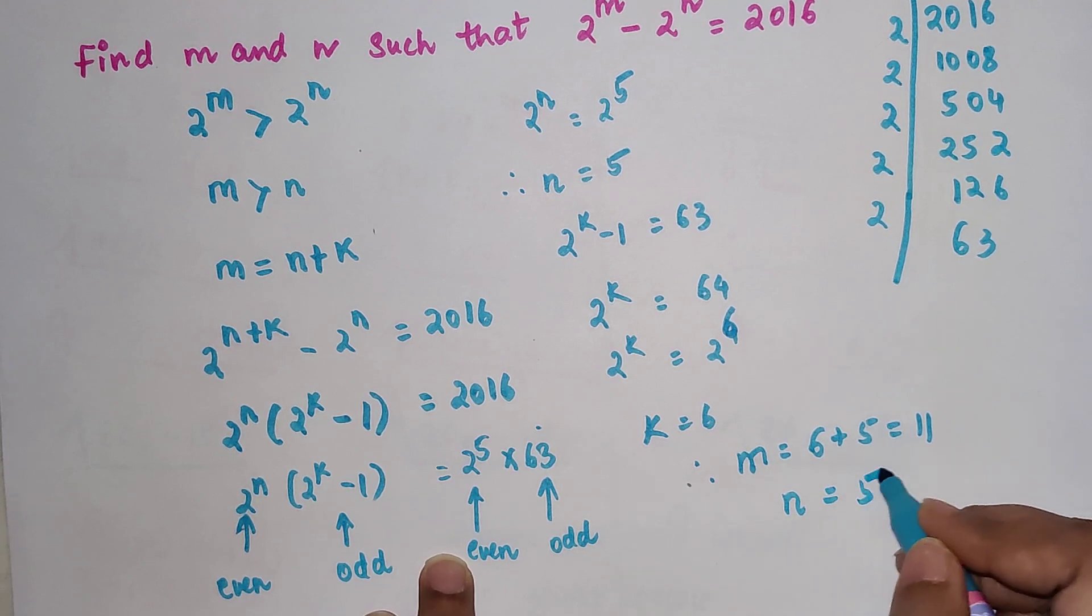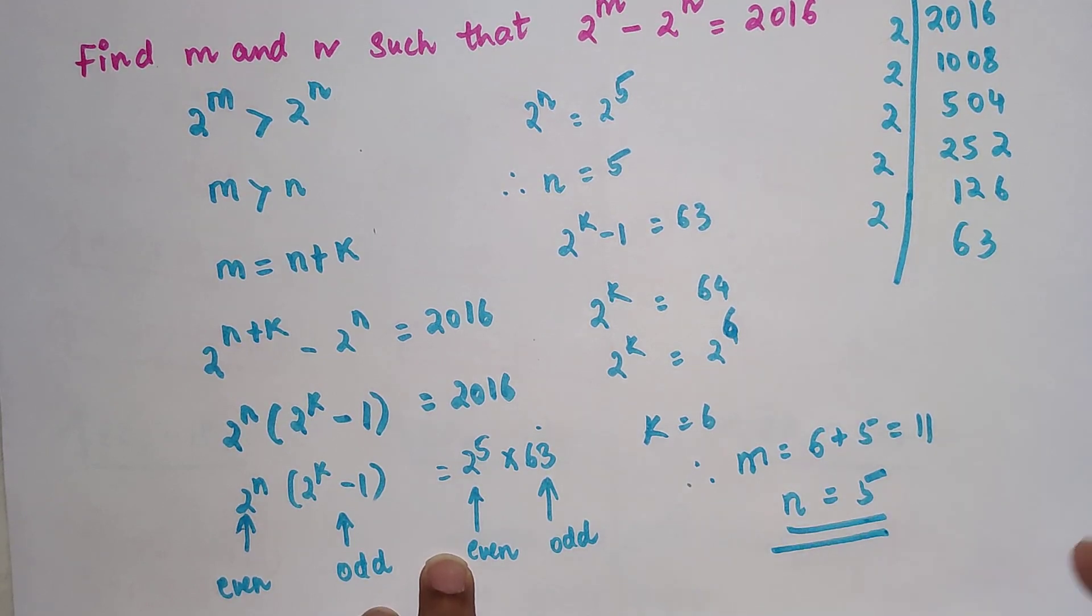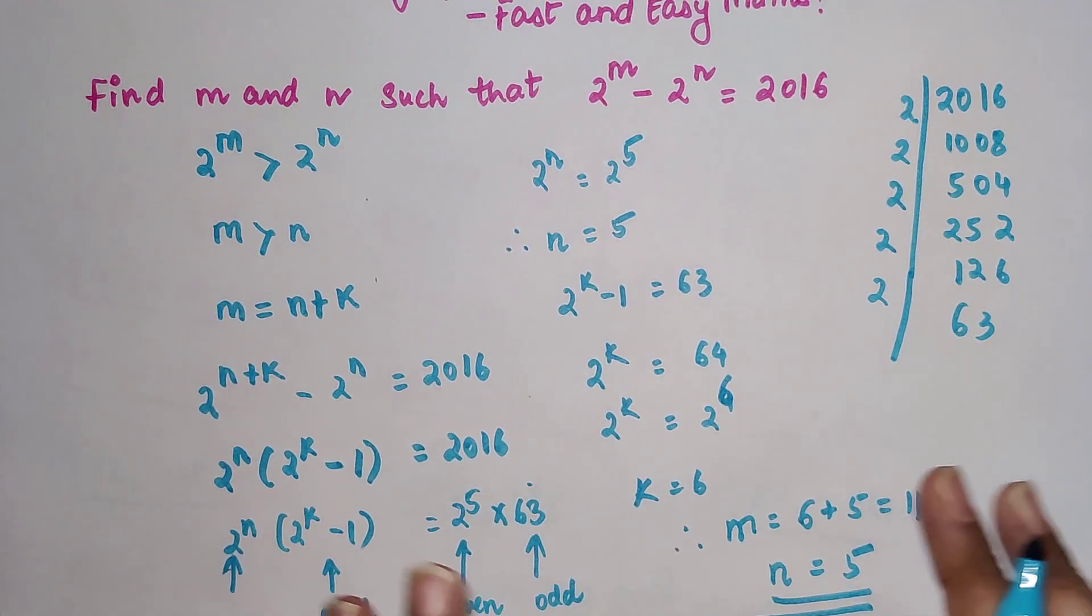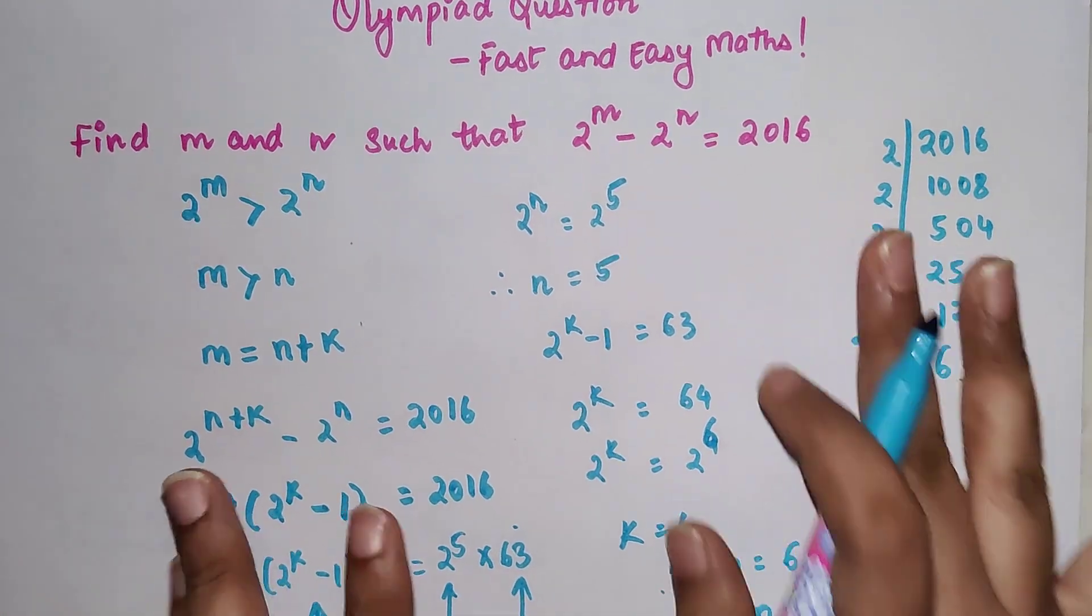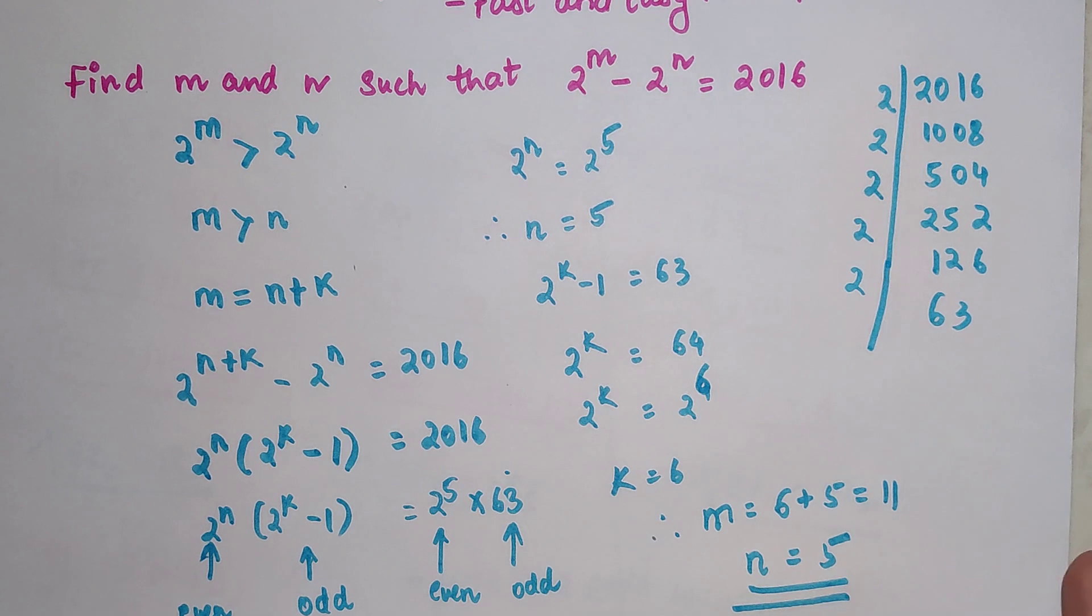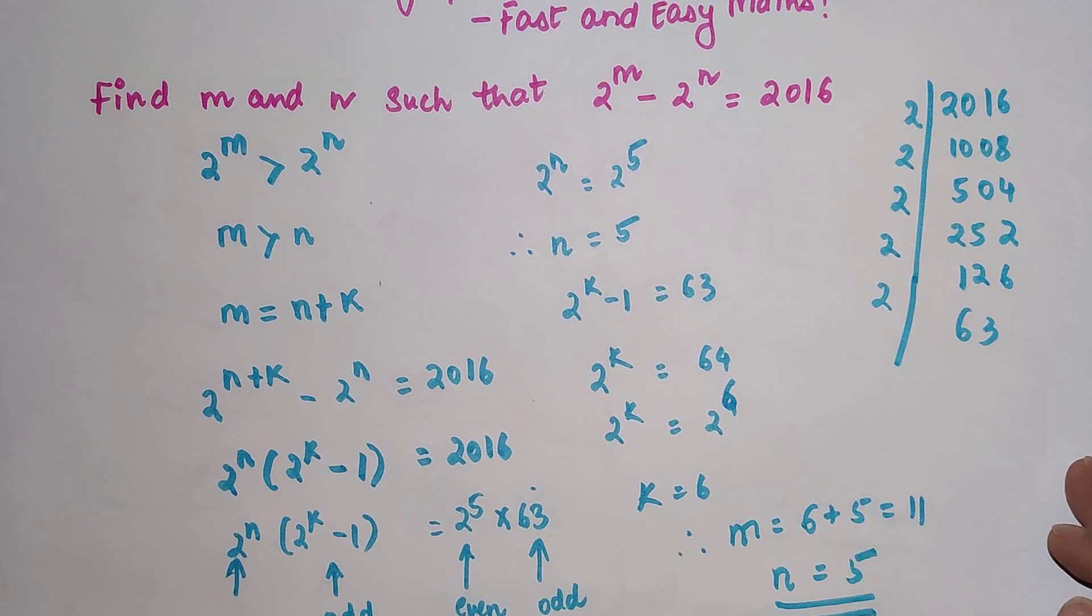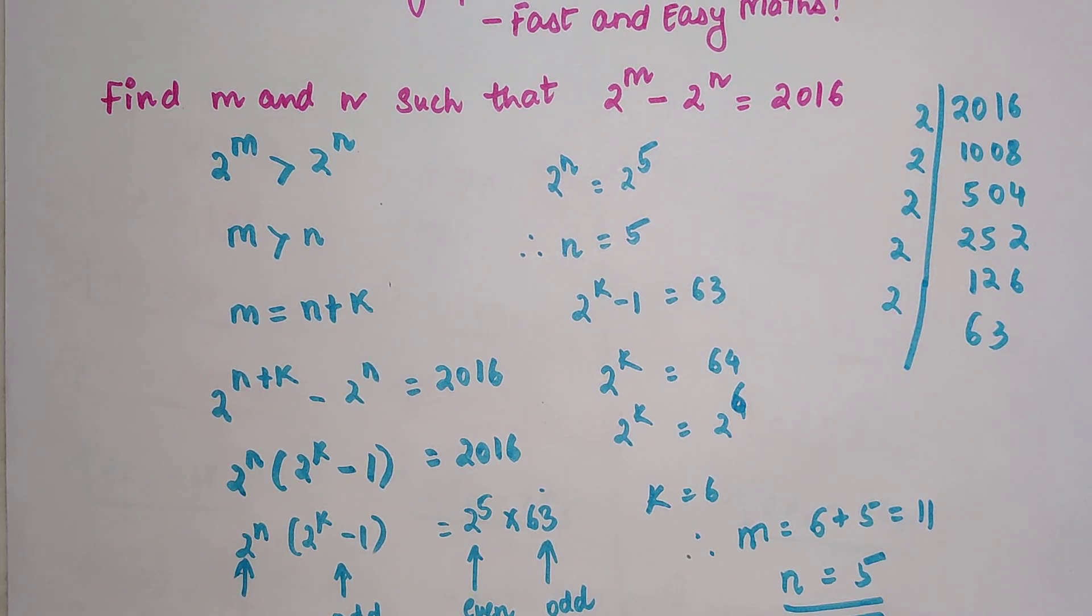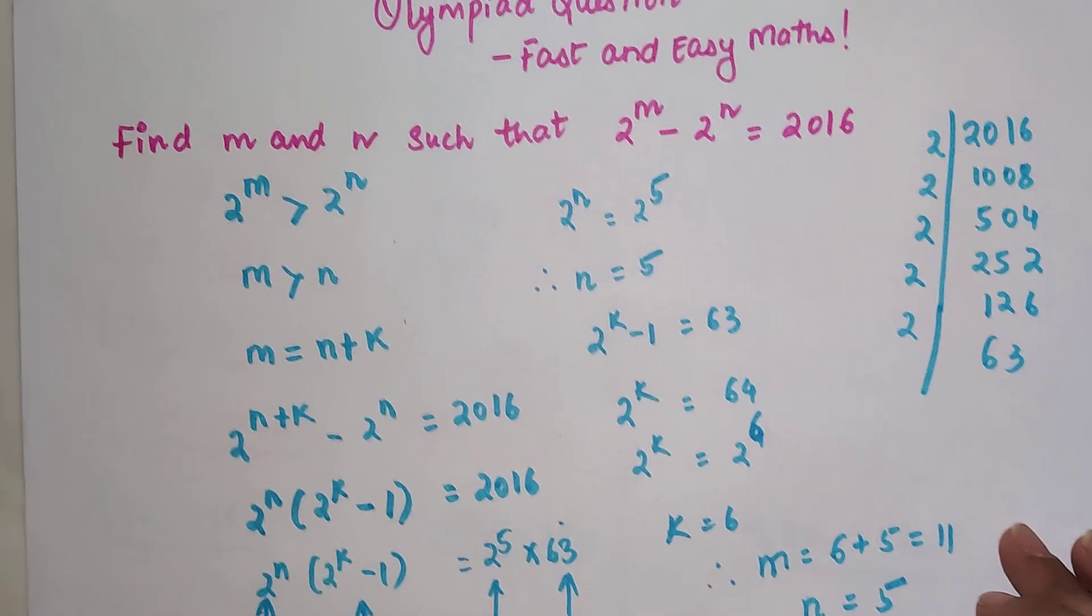And n is equal to 5, so that is your answer. I hope you understood how to solve these kinds of Olympiad questions. If you have any other question which is troubling you or whose solution you're not able to understand, please let me know in the comment section or you can even email me. The email is available in the description. A student had emailed me this question, that's why I made a video of it. So that's it for today. I will definitely see you in the next video. Do like and subscribe and don't forget to share these videos with your friends.